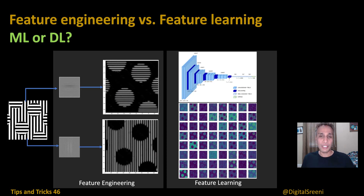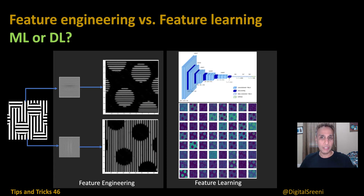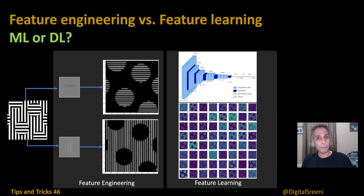Why am I doing this? I get a lot of questions about whether a given problem should be approached using traditional or conventional machine learning, or should I be doing deep learning? Usually if I have enough training data, it's a deep learning topic. Sometimes if you don't have a lot of training data, maybe there is a pre-trained deep learning model that can get you 80% there and you can handle the remaining 20%. Traditional machine learning — where you're doing feature engineering, extracting various features — can quickly solve problems without a lot of training data. But this video is not about that choice. I just wanted to show you the power of deep learning and also the power of feature engineering.